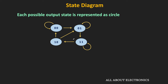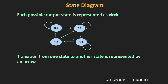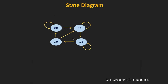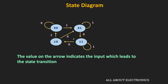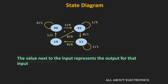In the state diagram, every possible output state is represented as a circle, and the transition from one state to another state is represented by an arrow. These arrows represent the transition from one state to another state, and the binary value on top of these arrows represents the input value which will lead to this state transition. For example, if the current state of the circuit is 00 and when we apply 1 as an input, then the state of the circuit will change from 00 to 01. But in the same state, if we apply 0 as an input, then the circuit will remain in the same state.